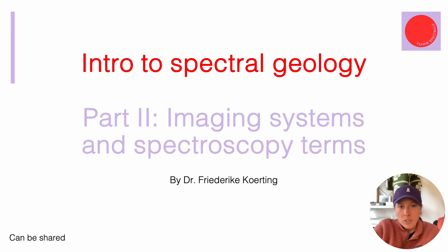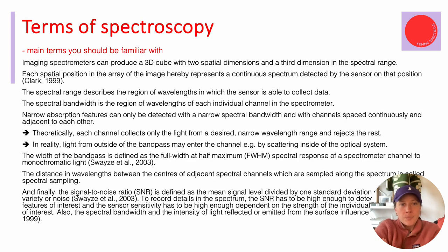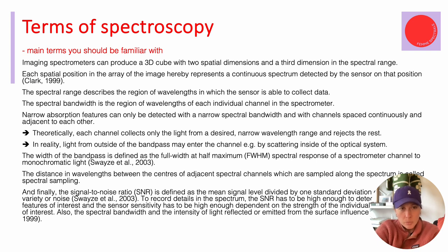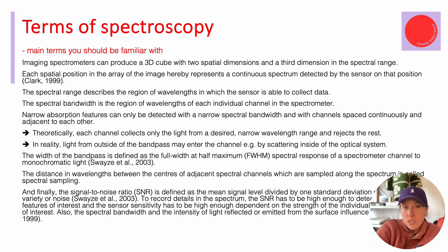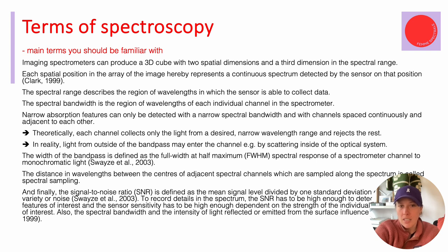Let's look at the basics of spectroscopy terms. There are a couple of different terms in the field of imaging spectroscopy that you should be familiar with. In general, imaging spectrometers produce a 3D cube representing reality — so 4D including the spectral space — with two spatial dimensions and a third dimension in the spectral range. Each pixel represents a continuous spectrum detected by the sensor at that specific position. I'm citing Clark from 1999 here.